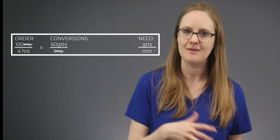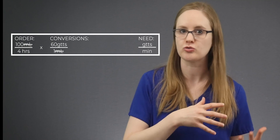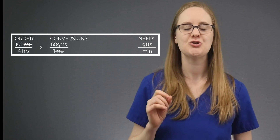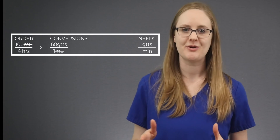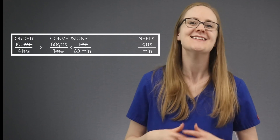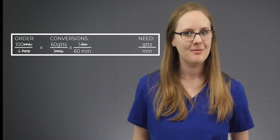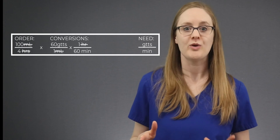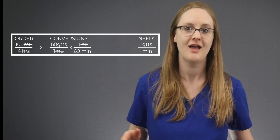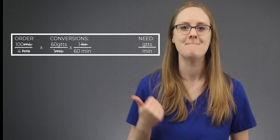We know we need drops per minute, so right now we can cross off milliliters because those cancel out. But we still need to convert hours into minutes, and we do that by writing 1 hour over 60 minutes, because 1 hour equals 60 minutes. Now hours cross out, and we're left with drops on the top and minutes on the bottom — which is exactly what we need. We know we've set this up correctly because the units that are supposed to cancel each other out do, and we're left with drops per minute.